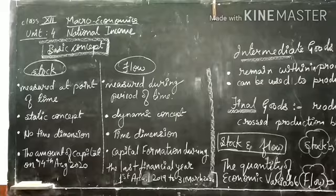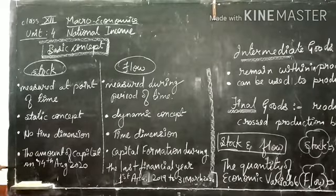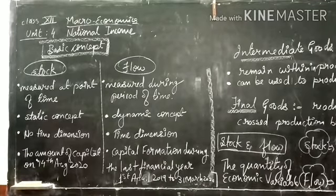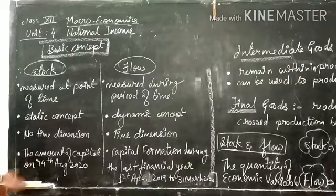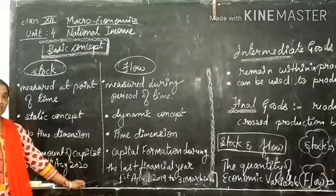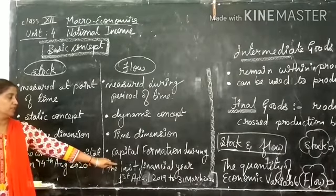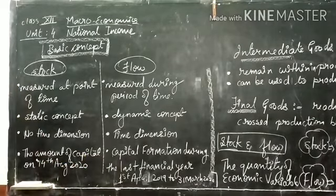An example of stock is the amount of capital on a particular date, such as 14th August 2020. An example of flow is the total capital formation during the last financial year, which runs from 1st April 2019 to 31st March 2020.